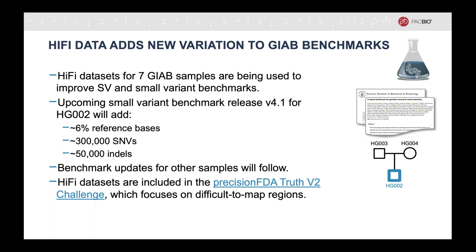In addition to detecting variants that have been identified by previous technology, we can use the variant calls from HiFi datasets to expand the truth set. HiFi datasets for seven Genome in a Bottle samples are being used to improve the benchmarks. For example, in an upcoming benchmark release V4.1 for the HG002 sample, it will add around 6% reference bases, about 300,000 single nucleotide variants, and around 50,000 indels. HiFi datasets are also being used in the precision FDA Truth Challenge V2, which will focus on difficult to map regions, and this challenge is currently in progress and will end around the beginning of June.